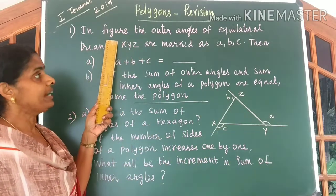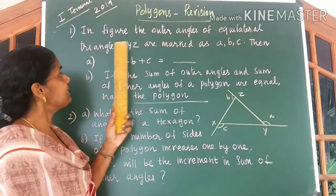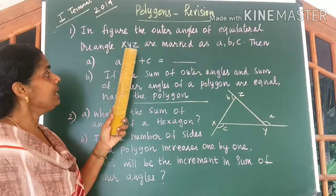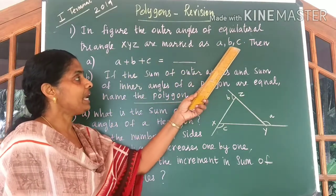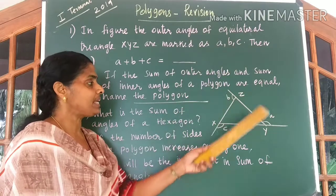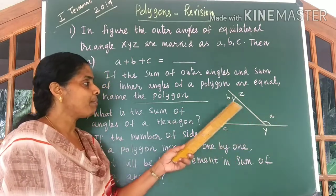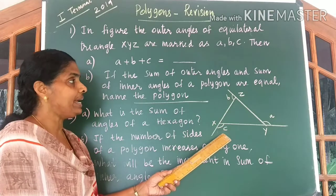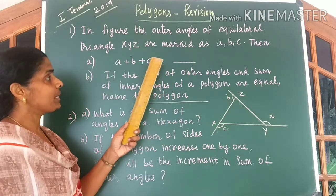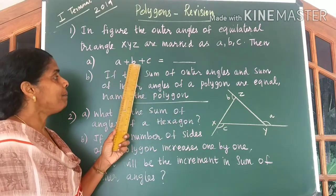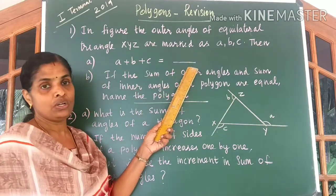In the figure, the outer angles of equilateral triangle XYZ are marked as A, B and C. Look at the figure. Outer angles are marked as A, B and C. You are given two questions. A plus B plus C is equal to dash.